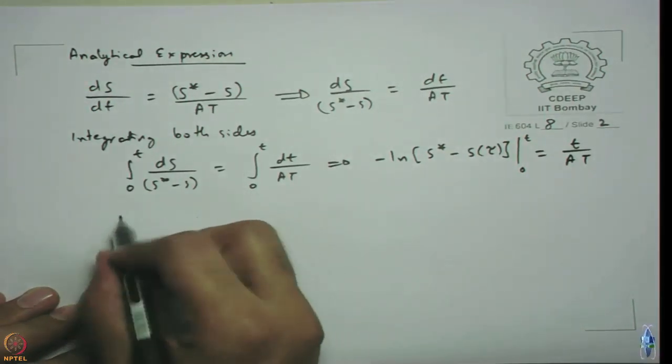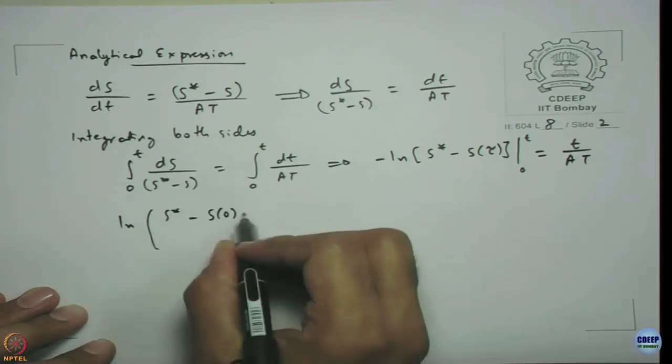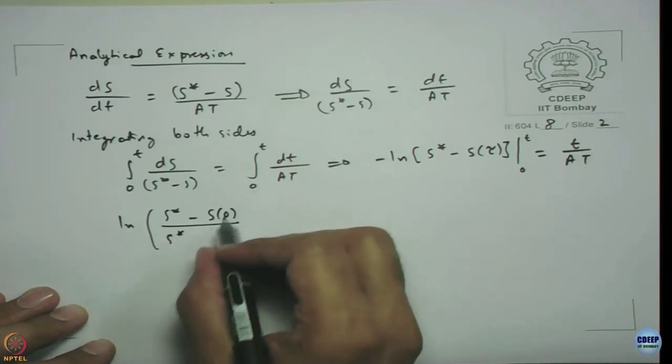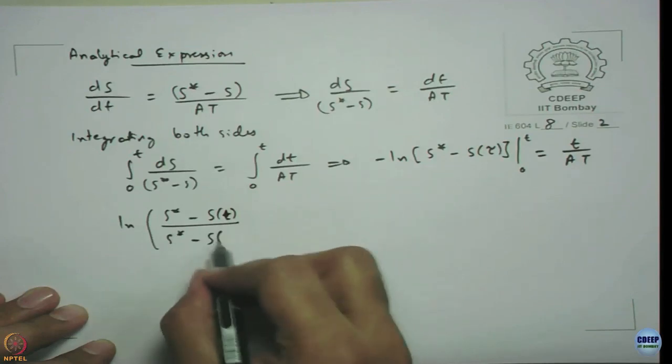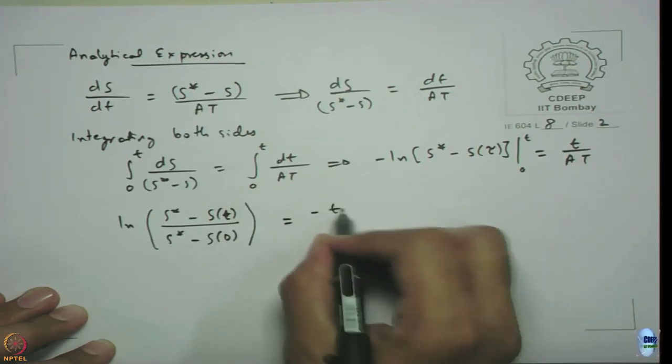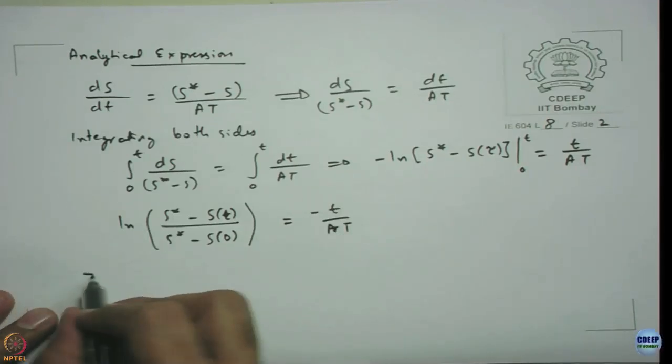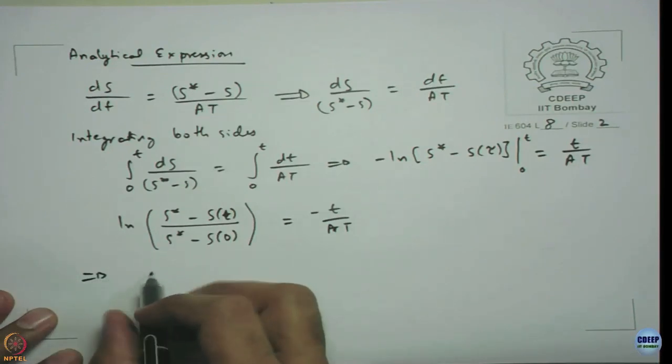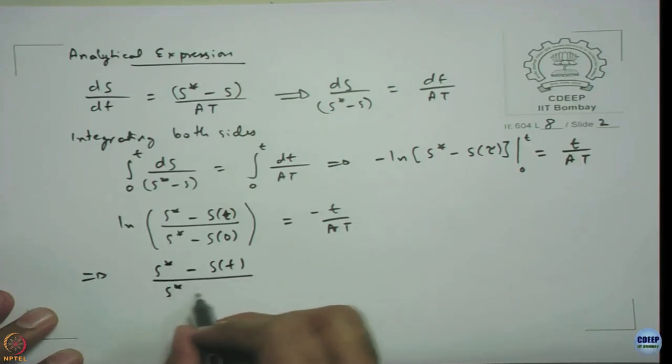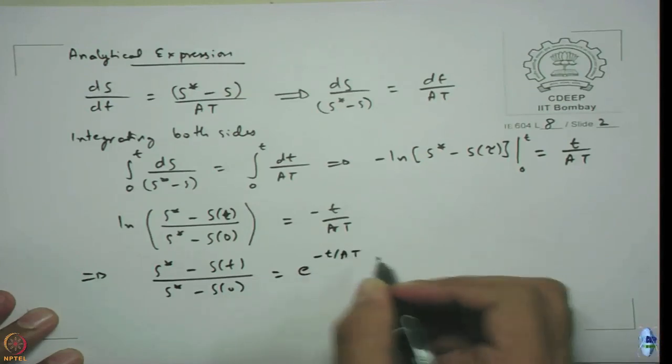Here I have ln[(s* - s(0))/(s* - s(t))] = t/AT, which equals (s* - s(t))/(s* - s(0)) = e^(-t/AT).